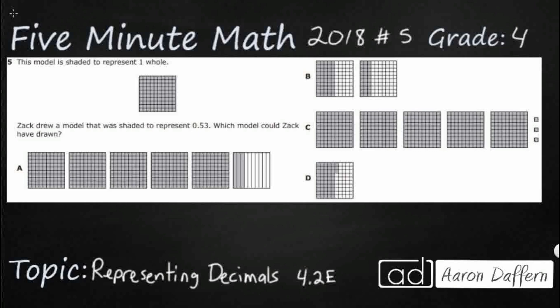We need to draw a model, or find the model, that Zach was using to represent 53 hundredths. When we've got our 53 hundredths, let's make sure we understand that the zero is actually in the ones place. So 53 hundredths is actually less than one whole. We've got a 5 in the tenths place, so we've got 5 tenths, and then we've got 3 hundredths. Notice the tenths and the hundredths have that -THS at the end. So whatever we're looking for is actually going to be less than one whole.